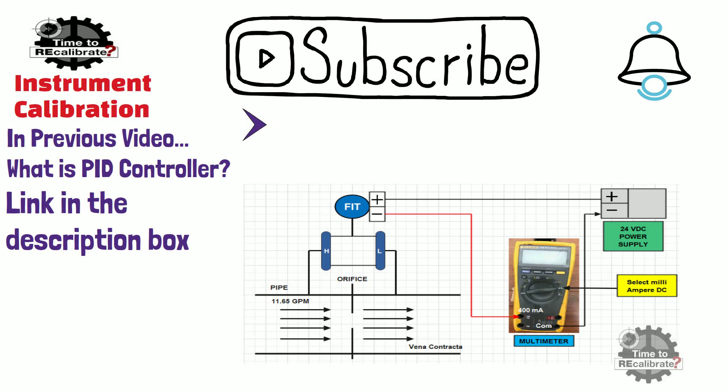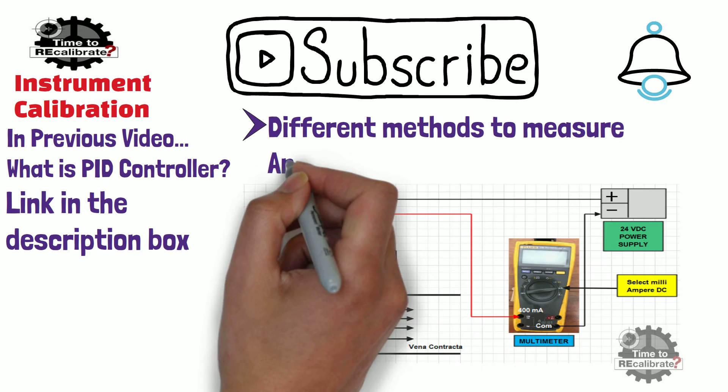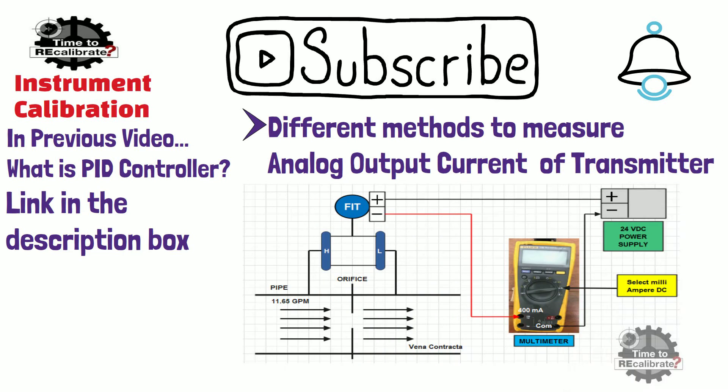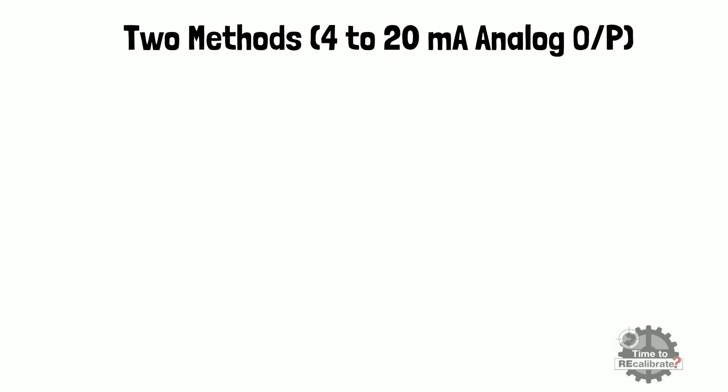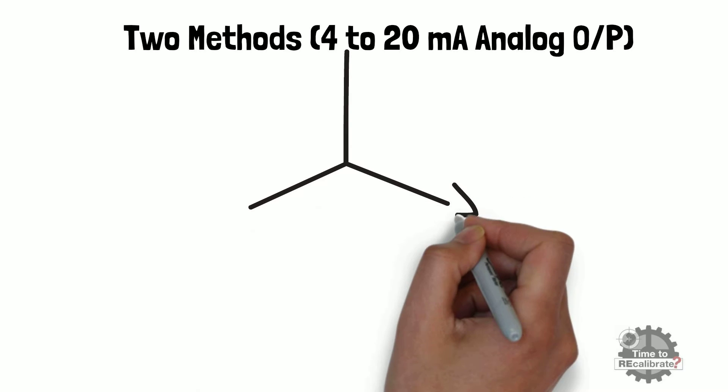In this video, I am going to explain different methods to measure analog output current of transmitter. There are two different methods to measure 4 to 20 mA output of transmitter.